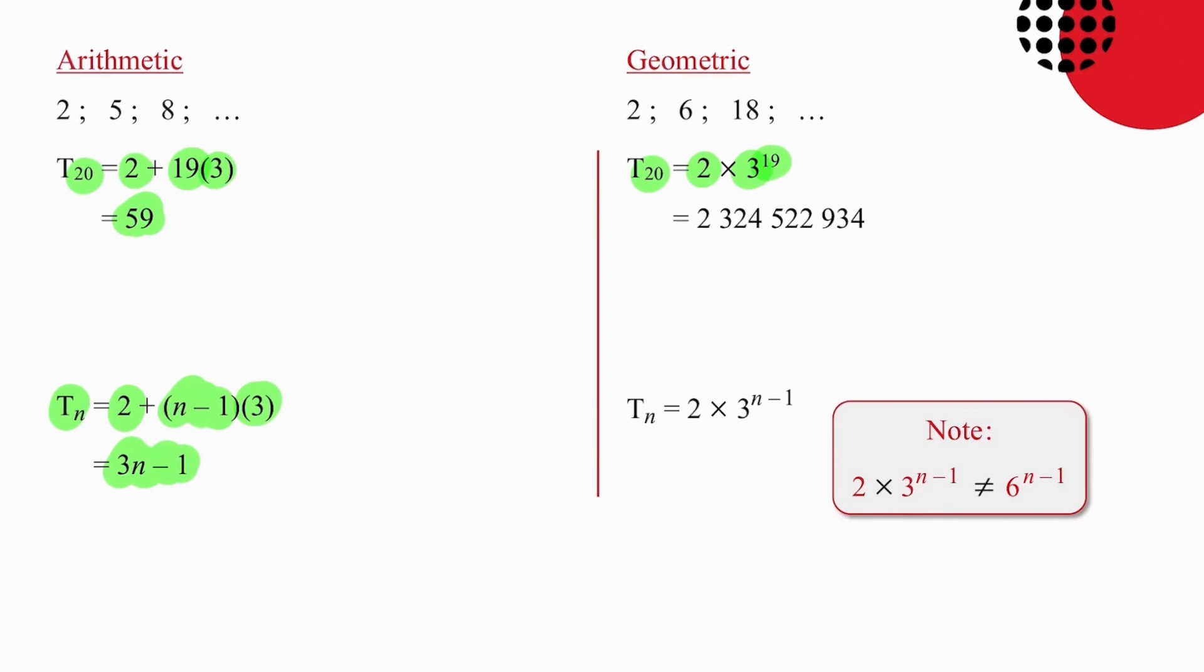Working instead with the geometric sequence, the nth term is generated by taking the first term and multiplying that by the ratio raised to the power of n minus 1. Notice that in both sequences, the difference between the position of the term and the amount that we are using in terms of the common differences, there is one less common difference than the position, and with the ratio, there is one less ratio than the position.